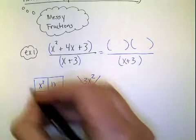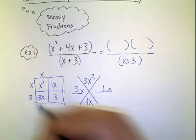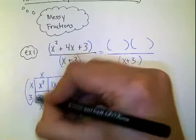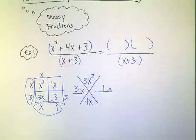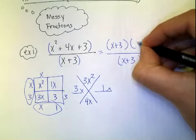Then I go around the outside edges. x times x is x squared. x times 3 is 3x. 3 times 1 is 3. And these are my parenthesis. So that's what I'm going to put up here. I'm going to put x plus 3 and x plus 1.